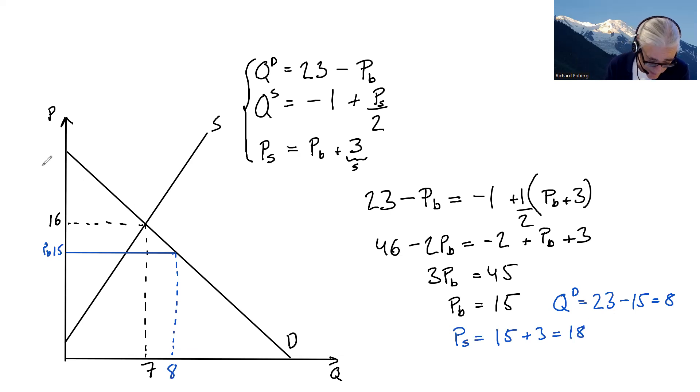Above the equilibrium price. 15 plus 3 equals 18. The same quantity, 8.